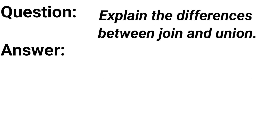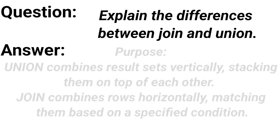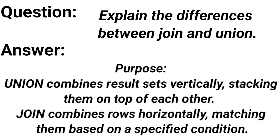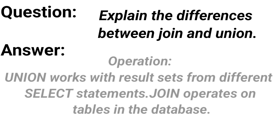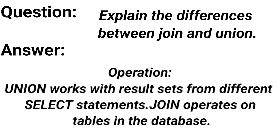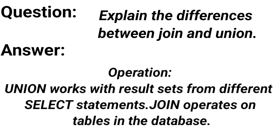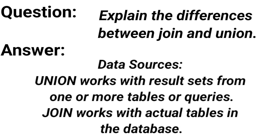Explain the differences between JOIN and UNION. In terms of purpose: UNION combines result sets vertically, stacking them on top of each other, while JOIN combines rows horizontally, matching them based on specified conditions. In terms of operation: UNION works with result sets from different SELECT statements, while JOIN operates on tables in a database. Regarding data sources: UNION works with result sets from one or more tables or queries, while JOIN works with actual tables in a database.